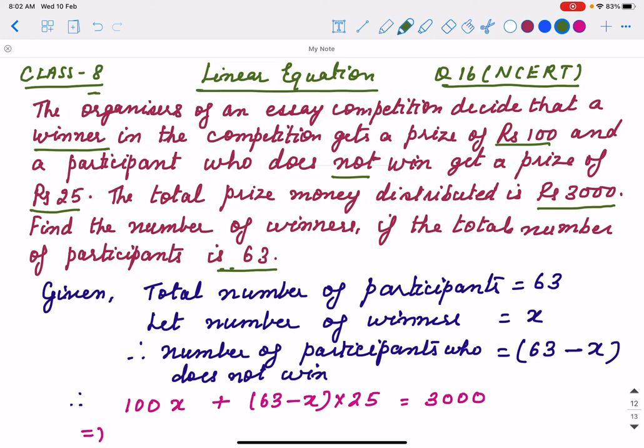Organizers of an essay competition decide that a winner will get a prize of Rs. 100. If one winner Rs. 100, two winners Rs. 200 like that. And a participant who does not win gets a prize of Rs. 25. So all participants who do not win they will get Rs. 25. And this way total prize money is Rs. 3000. They have Rs. 3000 out of which they are going to distribute to winners and who do not win.